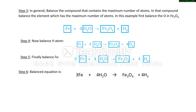Generally we balance the compound that contains the maximum number of atoms — it is not a rule, but generally we start there, and within that compound we balance the element with the maximum number of atoms. So first we balance oxygen in Fe₃O₄. There are four atoms of oxygen in Fe₃O₄, so to balance we write 4 outside the H₂O box on the reactant side. In this way we have balanced the oxygen.